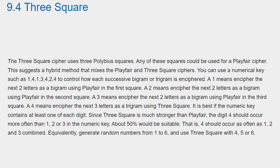It is best if the numeric key contains at least one of each digit. Since Three Square is much stronger than Playfair, the digit 4 should occur more often than 1, 2, or 3 in the numeric key. About 50% would be suitable. That is, 4 should occur as often as 1, 2, and 3 combined. Equivalently, generate random numbers from 1 to 6 and use Three Square with 4, 5, or 6.